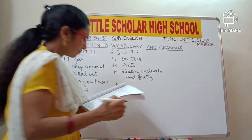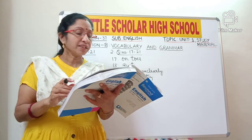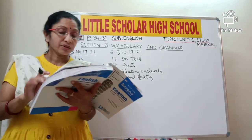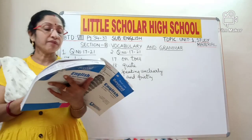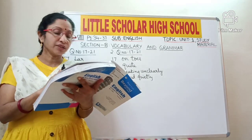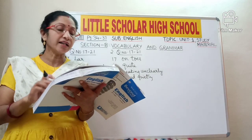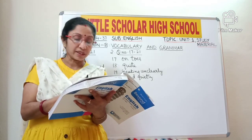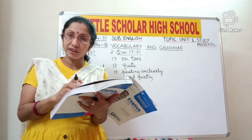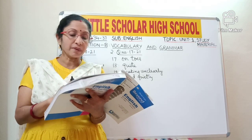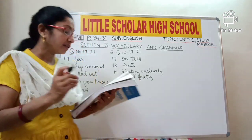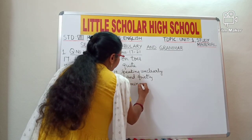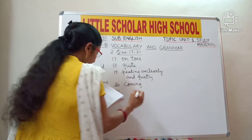Question number 20: 'Amma said loudly, I heard somebody come in a car.' Use the correct form of the verb. It should be 'I heard somebody coming in a car.' The word 'come' is in present tense; we should use the -ing form — present participle 'coming'. So 'come' will be replaced with 'coming'.